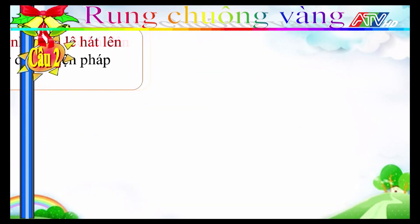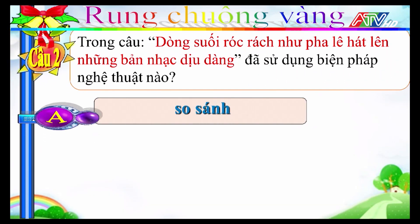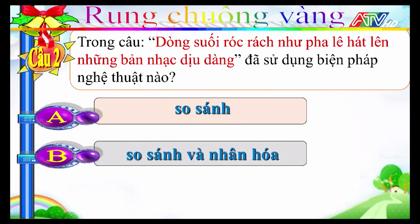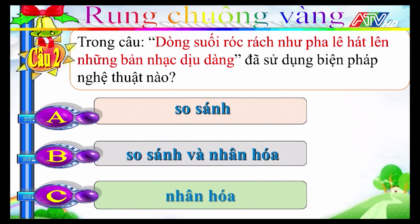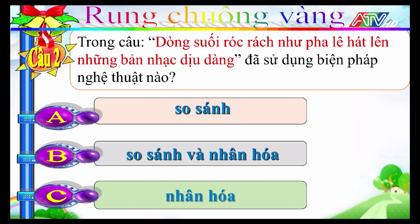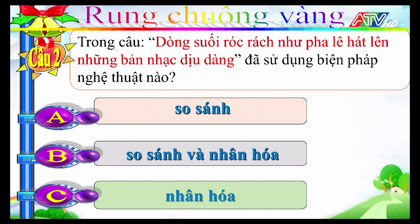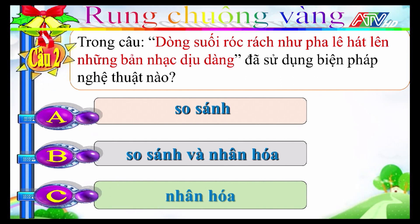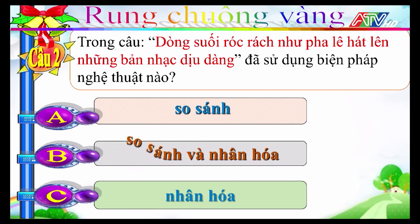Câu 2: Trong câu "Dòng suối róc rách như pha lê hát lên những bản nhạc dịu dàng" đã sử dụng biện pháp nghệ thuật nào? A-so sánh, B-so sánh và nhân hóa, C-nhân hóa. Đáp án đúng là B: câu trên sử dụng biện pháp so sánh và nhân hóa.